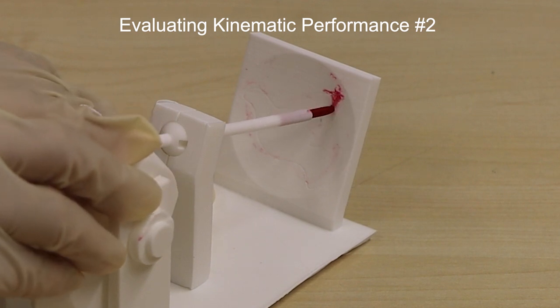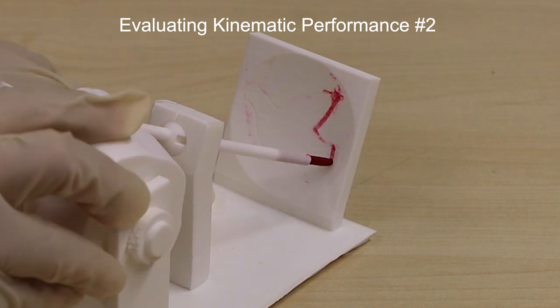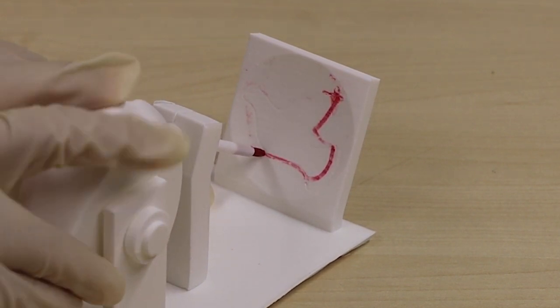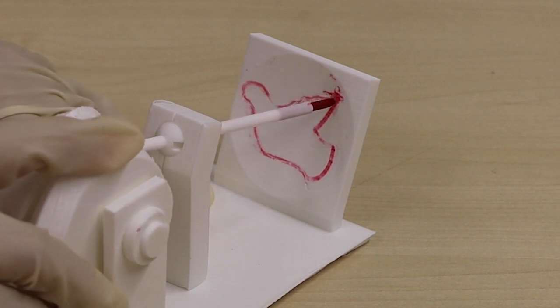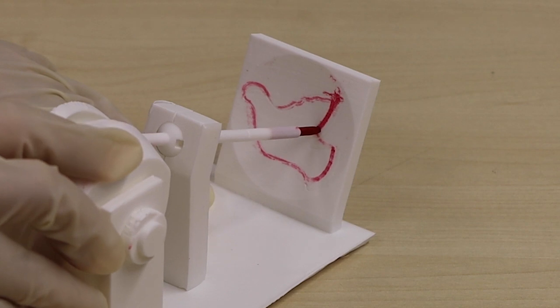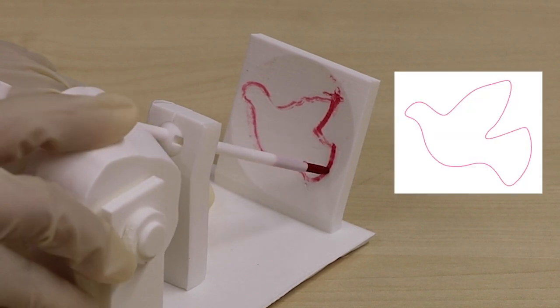Evaluating kinematic performance, experiment 2. In this experiment, we visualize the follower trajectory by drawing on a wall. The drawn curve is very close to the target one.